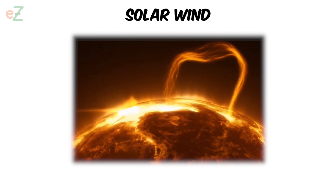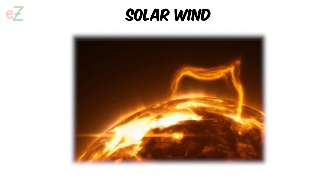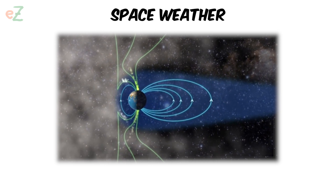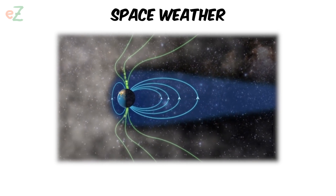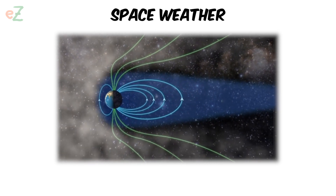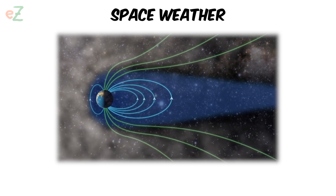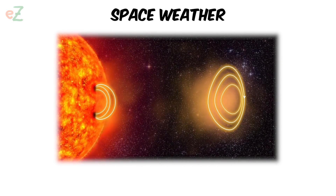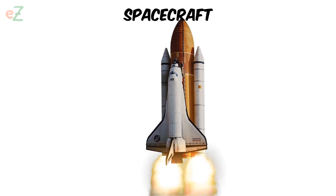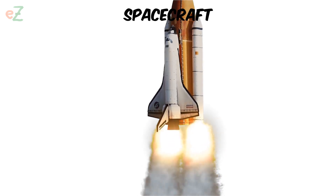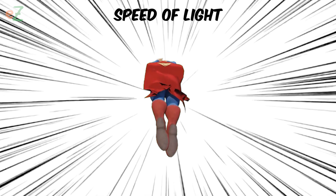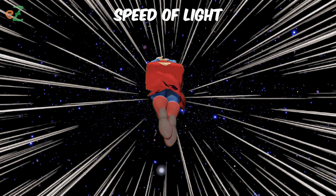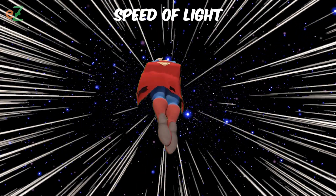Solar wind. The constant stream of particles and energy emitted by the sun. Space weather. The conditions in space that can affect Earth, satellites, and space travel. Space weather is mostly the result of solar wind and solar storms. Spacecraft. A vehicle used for traveling in space. Speed of light. Light is the fastest thing in the universe. It travels 186,282 miles every second.